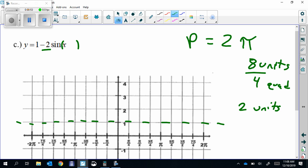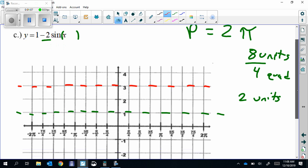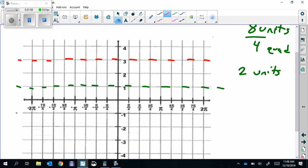It's not shifted left or right at all. We do need our amplitude drawn in there, so let's do that real quick. Amplitude is 2, so from our midline, it goes up 2 and down 2.